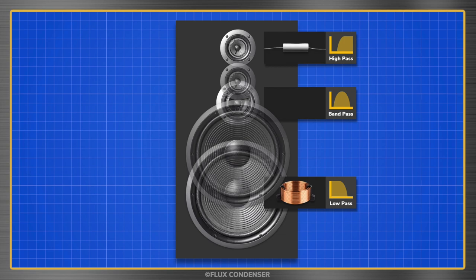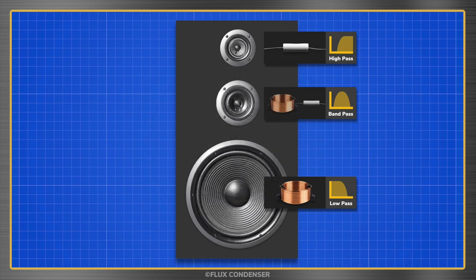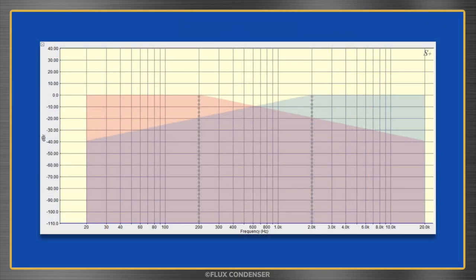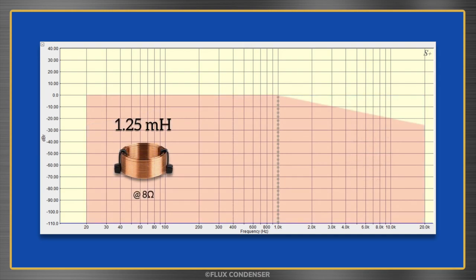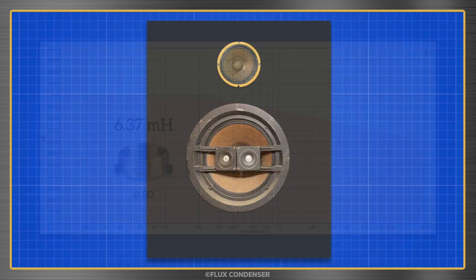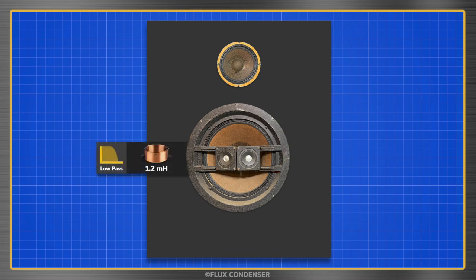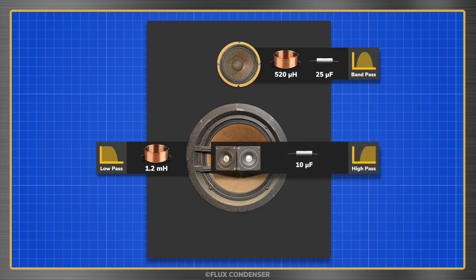In addition to protecting the drivers, this is another important reason speaker designers use crossovers. To create a bandpass filter, we can simply combine an inductor and a capacitor. The inductor blocks the highs and the capacitor blocks the lows. Only a specific band of frequencies is allowed to pass, hence the name bandpass filter. The frequencies at which a crossover splits the audio band can be controlled by changing the values of the inductors and capacitors. Increasing capacitance lowers the high-pass cutoff, and increasing inductance lowers the low-pass cutoff. In our Bozak speaker, the woofer gets 1.2 millihenries of inductance. The mid-range gets 520 microhenries of inductance and 25 microfarads of capacitance. And the tweeters get 10 microfarads of capacitance.